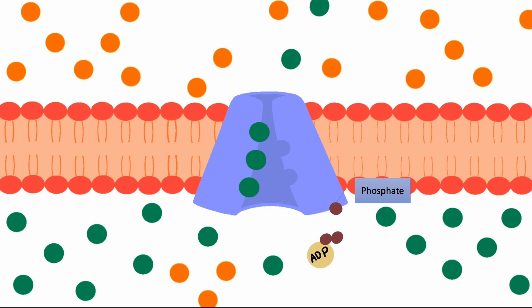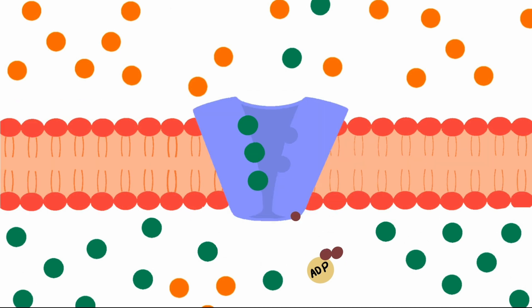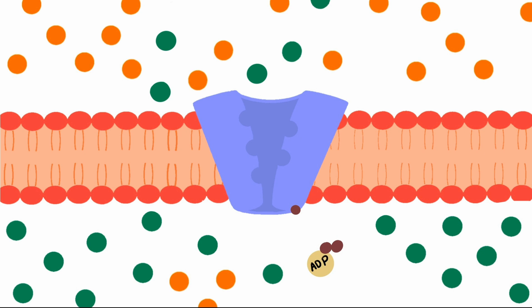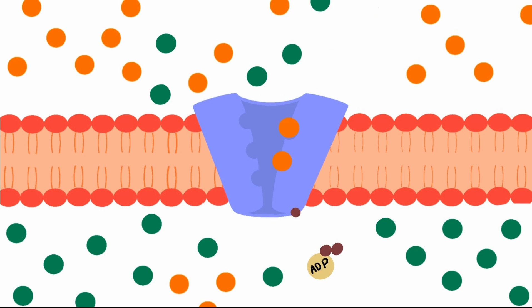This phosphate group remains attached to the pump, causing its phosphorylation. Phosphorylation then induces a change in the pump's shape, leading to the release of sodium ions into the extracellular fluid, followed by the binding of two potassium ions to the pump.